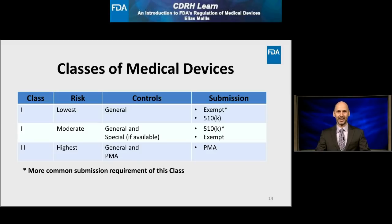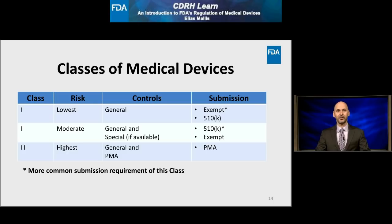This table describes the key characteristics of each class of medical devices, moving from left to right: the general risk of devices, controls necessary, and submissions required. As the risk of the device increases, so does the regulatory control to ensure its safety and effectiveness. Controls may be general, special, or PMA. Devices may be exempt from submission to FDA, or require a 510(k) or PMA, with some alternatives. For example, Class 1 devices generally present the lowest level of risk — subject to general controls only, and most are exempt from pre-market submission, though some may require a 510(k).